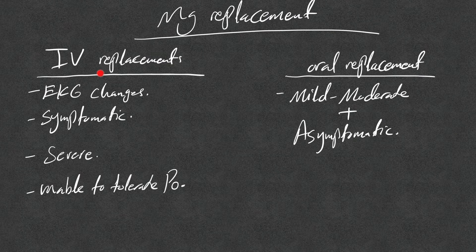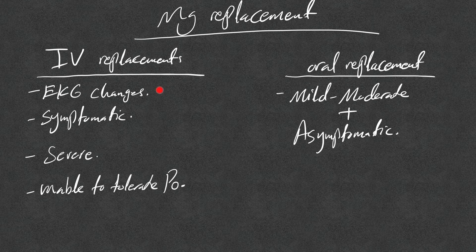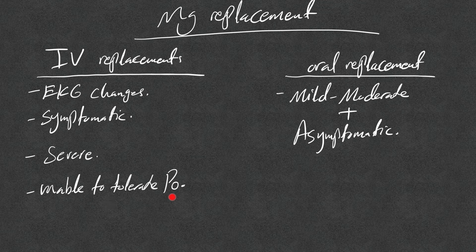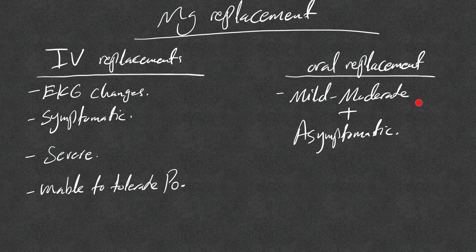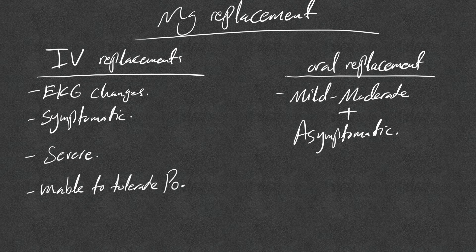Magnesium replacement: we have IV replacement and oral replacement. Magnesium IV replacement is indicated whenever there is any EKG changes, regardless of magnesium level, whether mild, moderate, or severe, but mainly this happens in severe hypomagnesemia. If there is any symptoms regardless of the level, if there is severe hypomagnesemia whether symptomatic or not, or if the patient is unable to tolerate oral magnesium because of GI side effects. Oral replacement is indicated in mild to moderate hypomagnesemia and asymptomatic patients, and sometimes for mildly symptomatic patients, especially if I do not want to give IV magnesium for a reason or another.